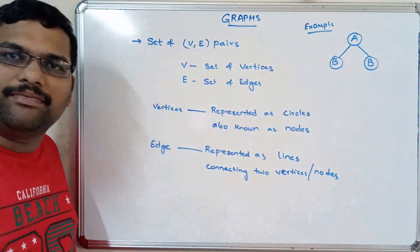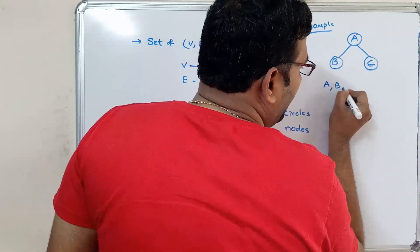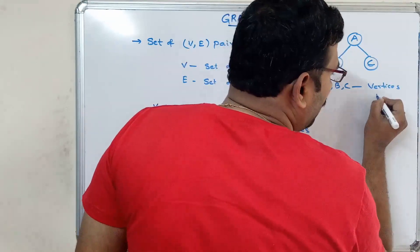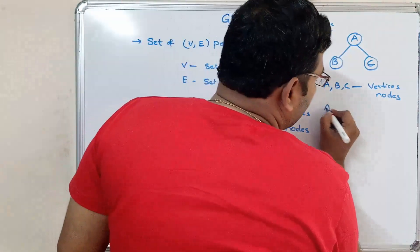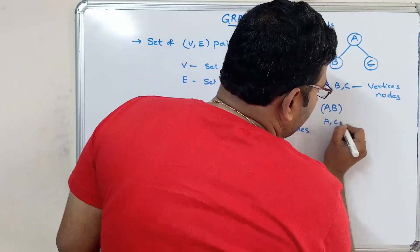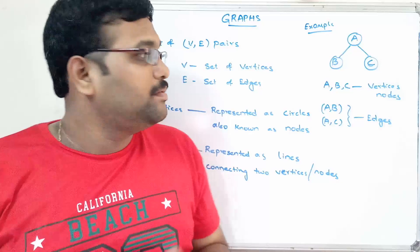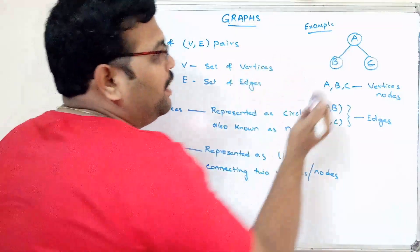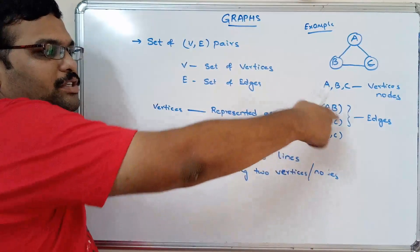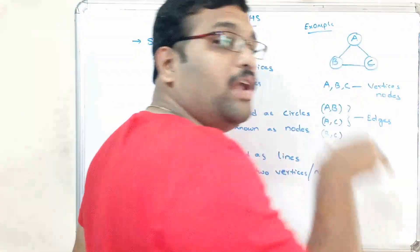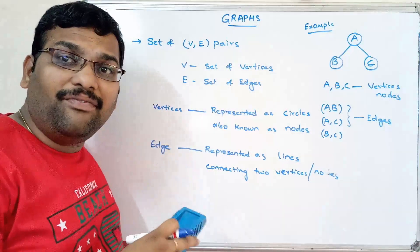Let's take an example of a simple graph. Here A, B, and C are vertices or nodes. The connectivity between the vertices — A-B and A-C — are called edges. So this can be considered a graph. If we also have a line between B and C, then B-C is also an edge, making it a graph but not a tree.